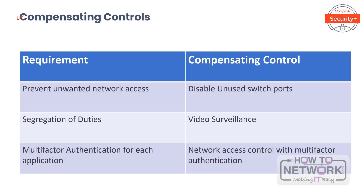In your digital life, you might know someone who doesn't want to incur the cost — monetary or perceived technical — of running anti-malware software. That person might compensate by being extra careful and navigating only to well-known trusted websites. Other examples: to prevent unwanted network access in a wired network, the compensating control is to disable unused switch ports. To ensure segregation of duties is followed, video surveillance can be the compensating control. To ensure multi-factor authentication for each application, implement network access control with multi-factor authentication.